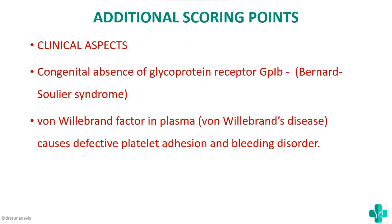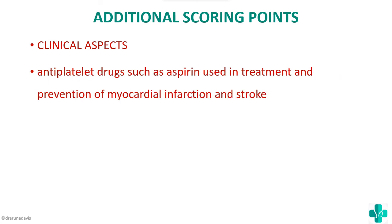For additional scoring points, clinical aspects are important. A congenital absence of glycoprotein GP1B can cause Bernard-Soulier syndrome. A defect in von Willebrand factor can cause von Willebrand disease. Both result in defective platelet adhesion and a bleeding disorder. Another applied aspect: anti-platelet drugs such as aspirin are used in the treatment and prevention of myocardial infarction and stroke, which are caused by blood clot formation inside blood vessels.